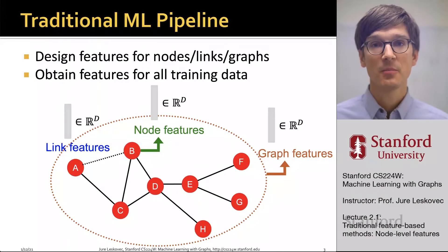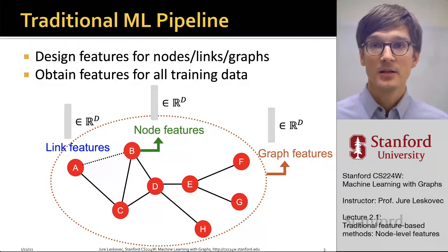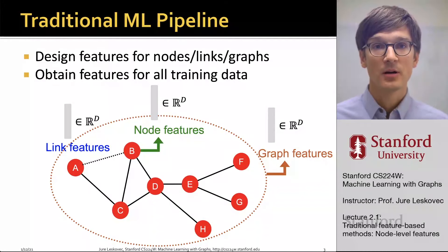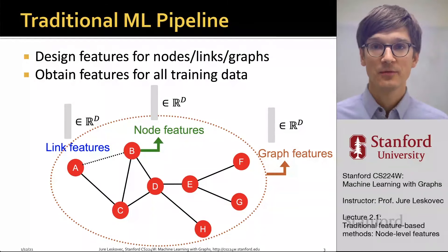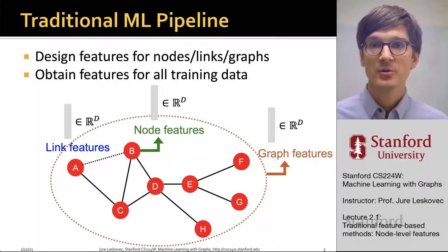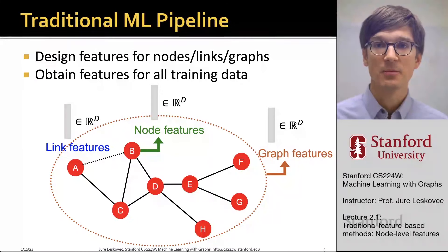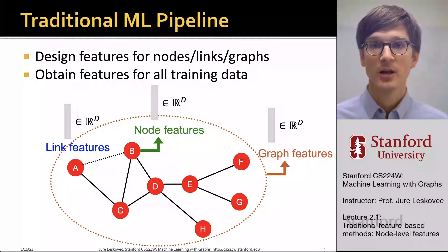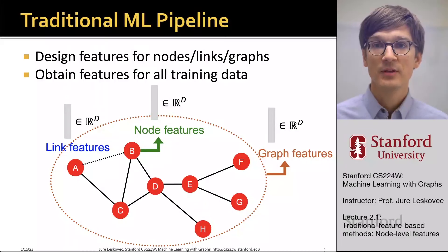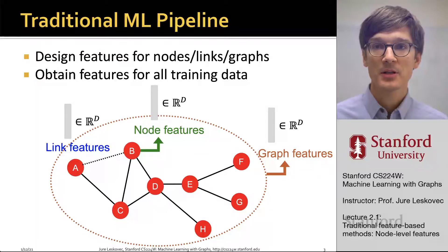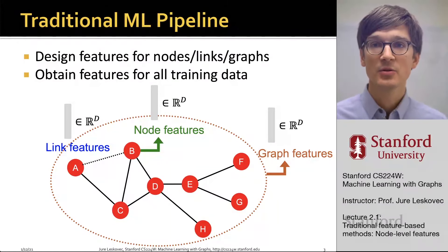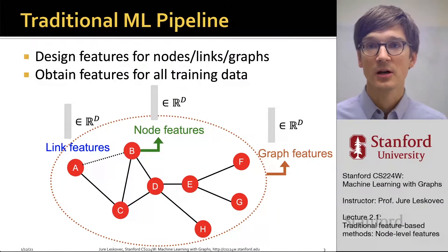The traditional machine learning pipeline is all about designing proper features. Here we are going to think of two types of features. We are going to assume that nodes already have some types of attributes associated with them. So this would mean, for example, if this is a protein-protein interaction network, proteins have different chemical structure, have different chemical properties, and we can think of this as attributes attached to the nodes of the network.